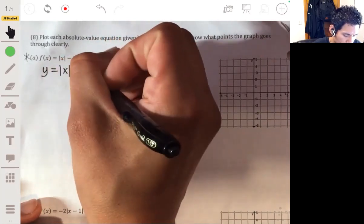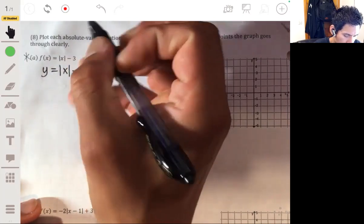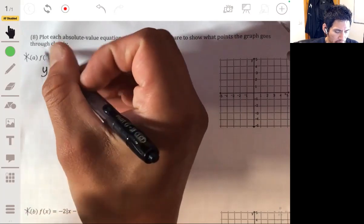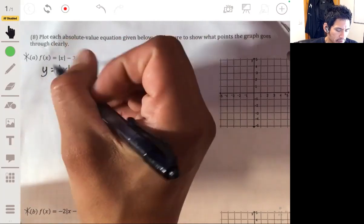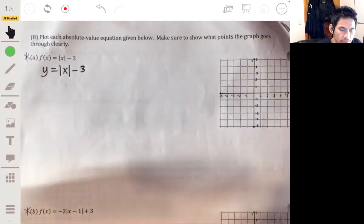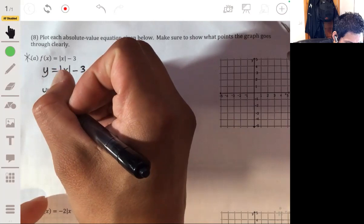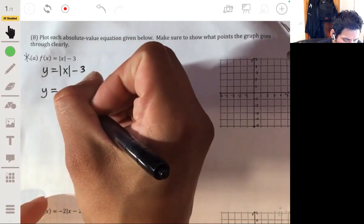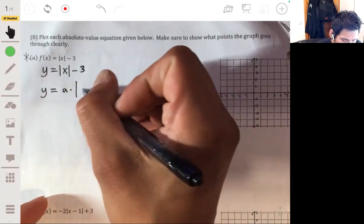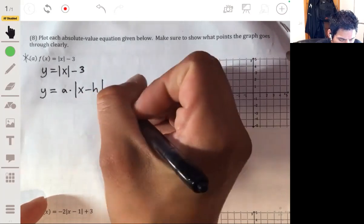Here's the thing. Let's look at this equation: f(x) equals absolute value of x minus three, which is just the same as y equals the absolute value of x minus three. In general, we can write absolute value equations as y equal to a times absolute value of x minus h plus k.